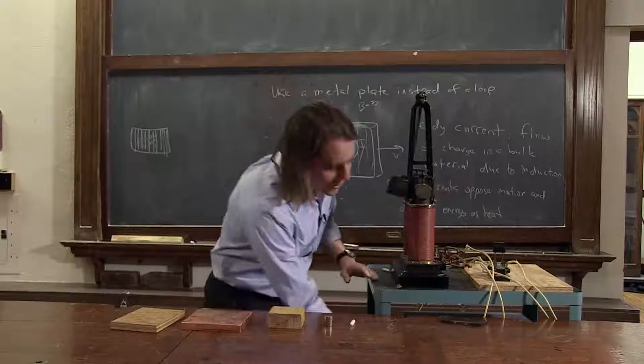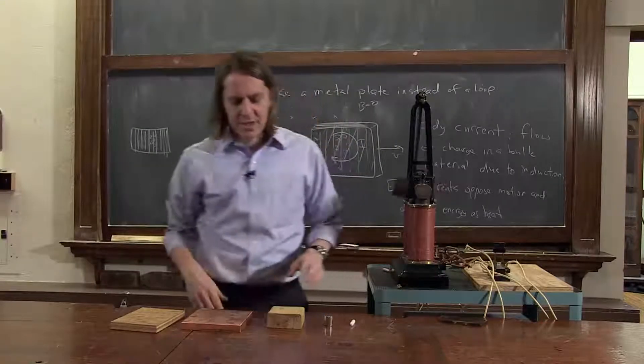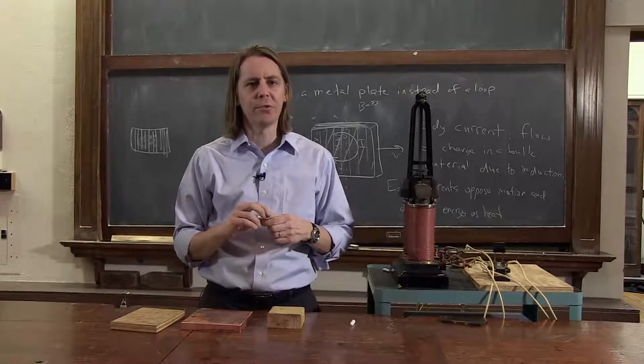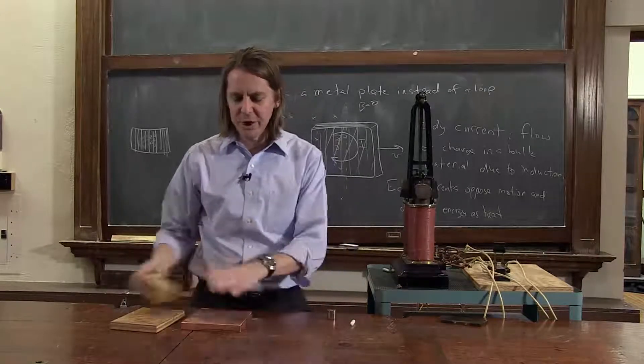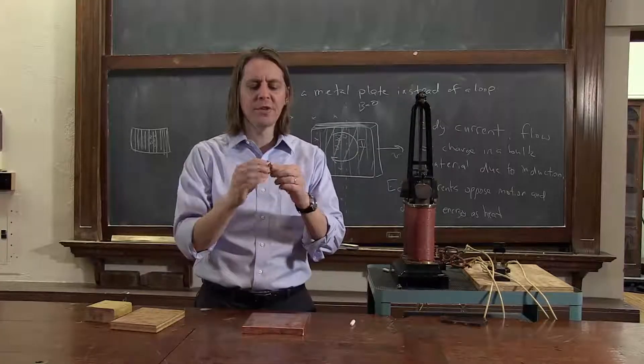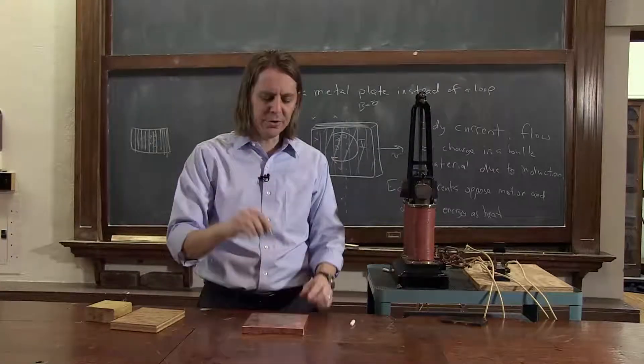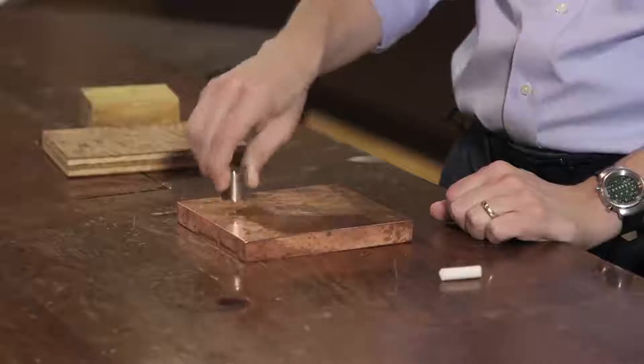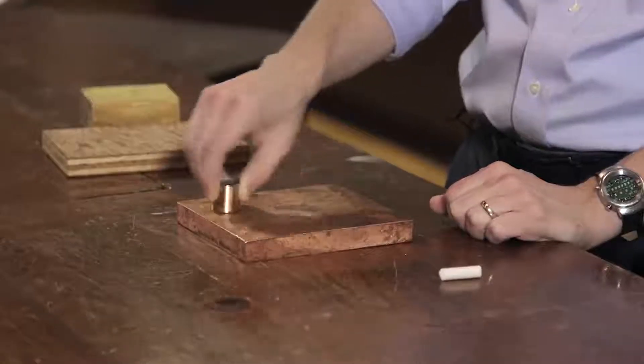Another place you might see this is if you have a magnet anywhere near a highly conductive surface. So here we have this big copper block. This is interesting. If you get these large neodymium magnets that have large strong fields, you can actually feel the eddy currents when you move the magnet around on the block. You feel a resistive force.